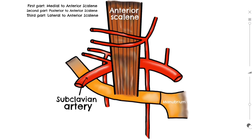So far we've covered the surrounding structures and the course of the artery. Now it's time to understand the branches that come off the artery and what they supply. There are quite a few, so to make it easier we have a handy mnemonic: Vitamin C and D. Each letter represents one of the branches. The first three all stem from the first part of the subclavian artery.